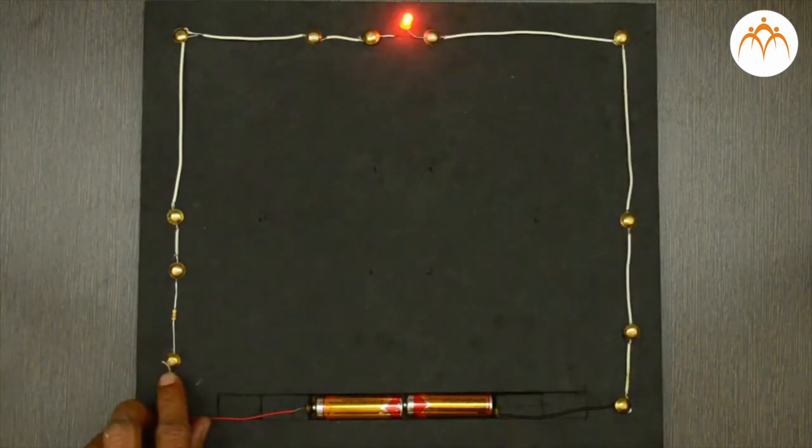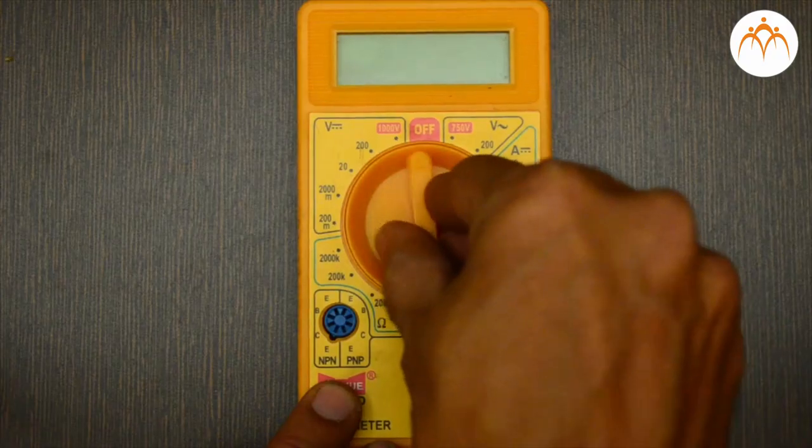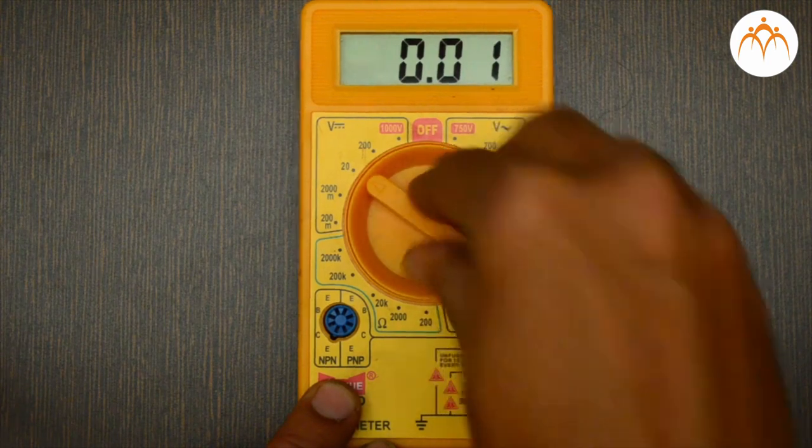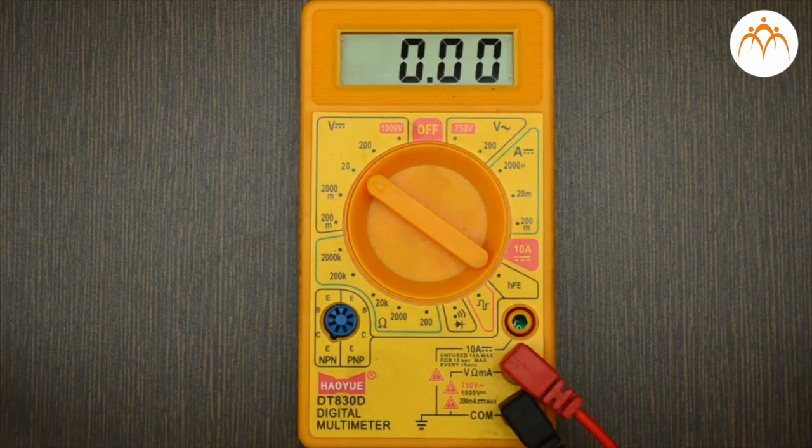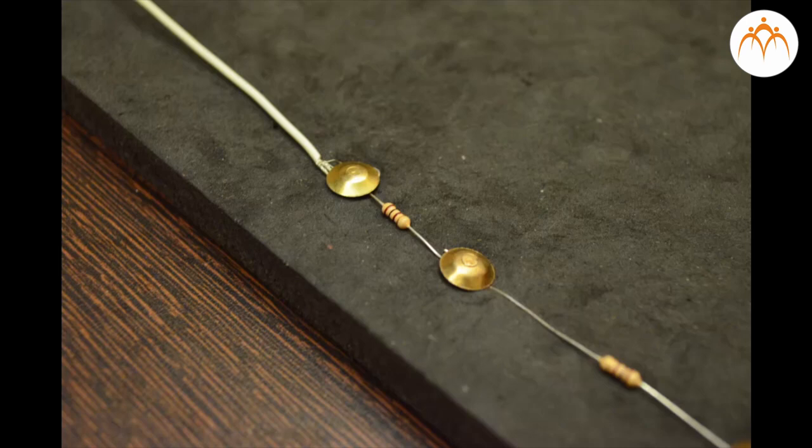Multimeter is used to measure potential difference, current, and resistance of the components. It is always advisable to use resistors in the circuit to limit the flow of current. In this case, a 100 ohm resistor is used.